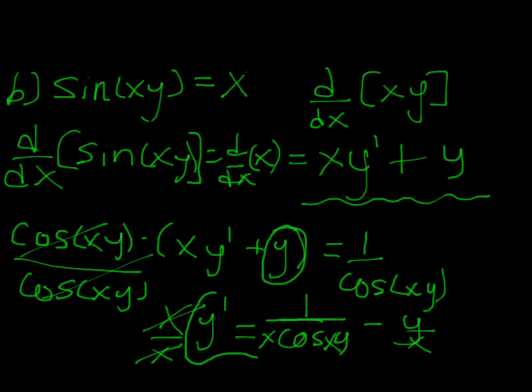Y prime, and I'm kind of short on space here. Y prime is equal to 1 over x cos xy. I should put some brackets around that guy. Minus y over x. So that is the implicit derivative of sine xy is equal to x.